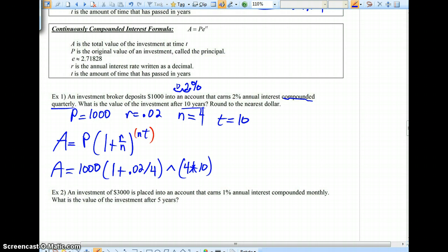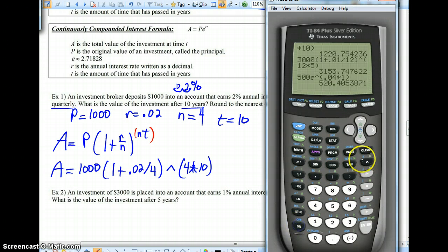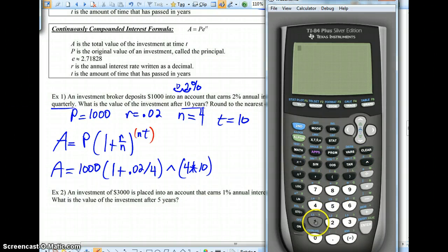And at this point, you know what, we're going to bring the calculator out and just let the calculator do the work for us. That's 1,000, parentheses, 1 plus .02 slash 4. And we're going to raise that up, parentheses, 4 times 10. So at this point, just hit enter.